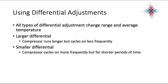All types of differential adjustments change range and average temperature. A larger differential means the compressor runs longer but cycles on less frequently. A smaller differential means the compressor cycles on more frequently but runs for shorter periods of time. It is a balancing act — whichever is preferable for the space or product you are trying to cool.